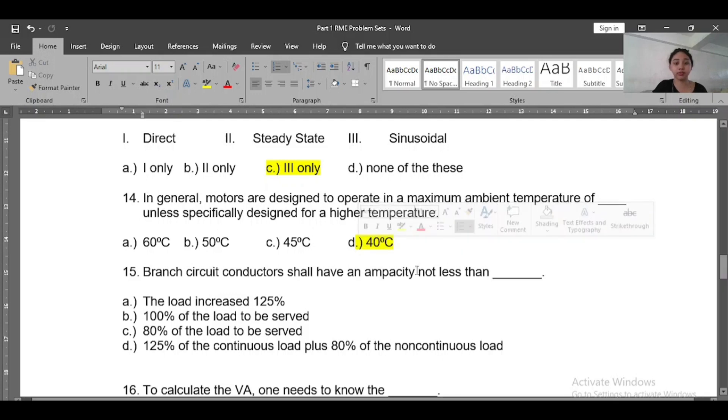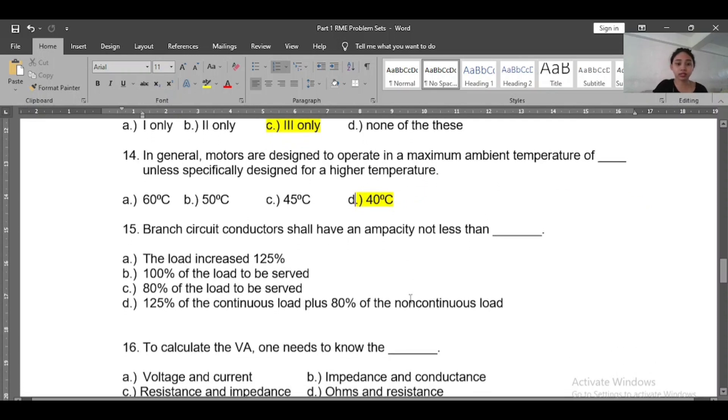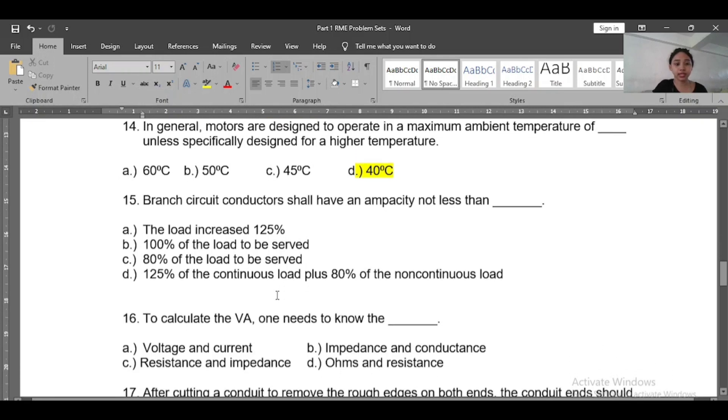Number fifteen: The branch circuit conductors shall have an ampacity not less than - A) the load increased 125%, B) 100% of the load to be served, C) 80% of the load to be served, D) 125% of the continuous load plus 80% of the non-continuous load. So the answer of number fifteen is B, 100% of the load to be served.